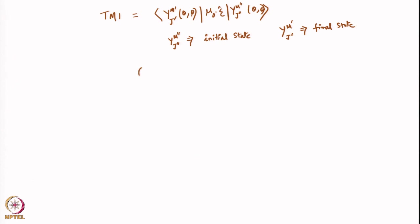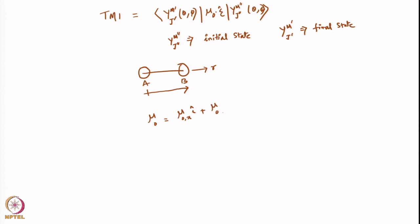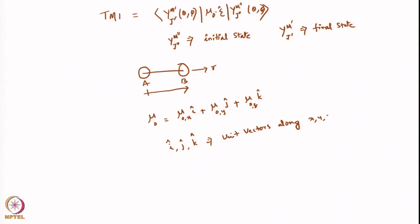If you consider the molecule AB along some direction R, R could be pointing in any direction along x, y, or z. So μ₀ will be equal to μ₀x times unit vector i along the x-axis, plus μ₀y times unit vector j along the y-axis, plus μ₀z times unit vector k — where i, j, k are unit vectors along x, y, z axes.